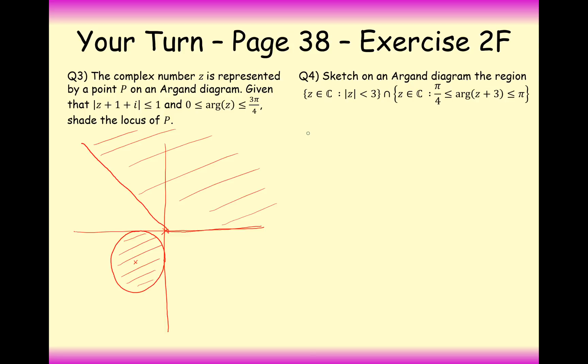And so question four here is we're looking for the radius away from the center points to be three. So that's three here, three i up here, minus three here and minus three i down here. And the second condition is for arg of z plus three. So we'll start the argument at this point here to be in between pi by four, that's that line there, and pi, that's this line here. So the argument is going to be in between that region there and inside this circle here.